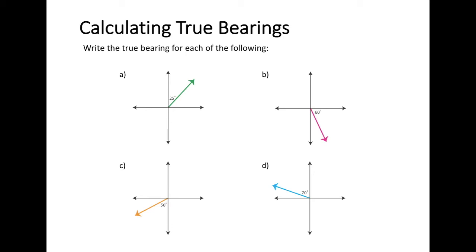When doing true bearings, we always start looking at north first and the angle that our line makes with north. For example A, starting with the north line and looking at the angle to reach the direction of travel, that angle is 25 degrees. So the true bearing is written as 025°T.